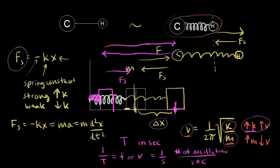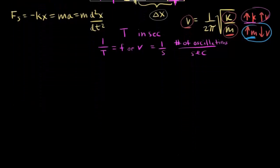What happens if you change the mass? Instead of hydrogen, if you change to carbon or oxygen — something with more mass — the frequency of oscillation decreases. However, this model only has the hydrogen moving, but in a stretching vibration both atoms are actually moving. So we have two masses, M1 and M2, representing the nuclei of the atoms, and we need to account for that.